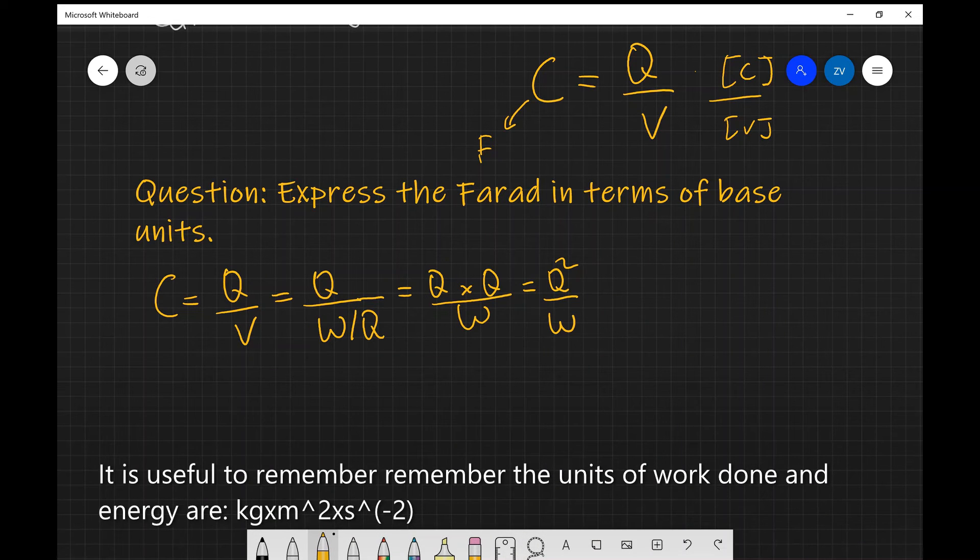Now this is where we can start introducing some units. In fact, I'll probably even take it a step further and say that Q equals I times T squared, and work done has the same units as force times distance. Now let's start inputting some units.